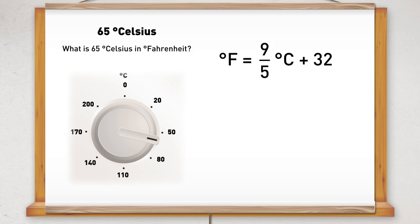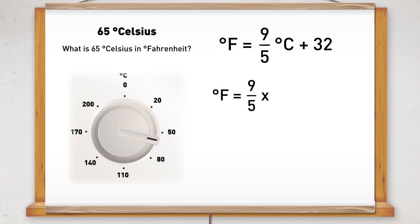So here we go. We need to substitute the degrees Celsius into the formula. F equals 9 over 5 times 65 plus 32.